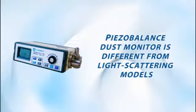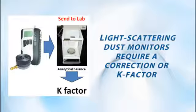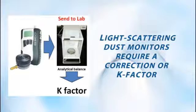The major difference is in how the 3521 measures particulates. Light scattering monitors, including the Model 3443 from Canamax, require a k-factor to accurately measure mass concentration. A k-factor is a correction factor that is based on the density of the sampled material.